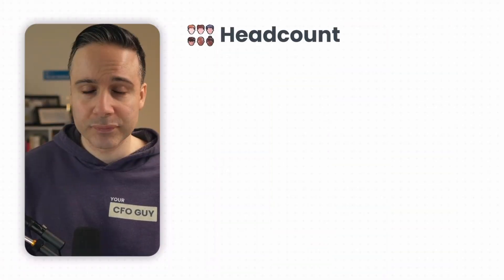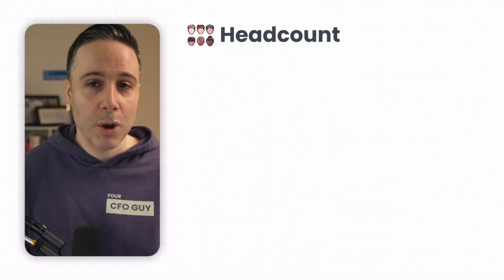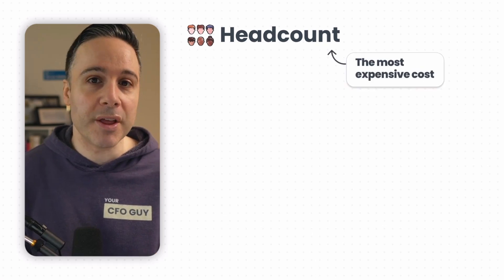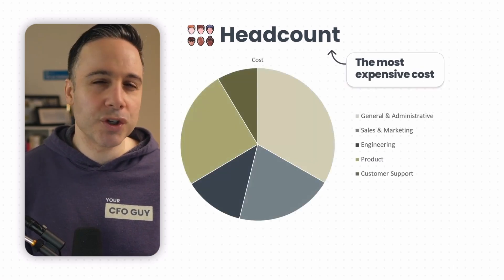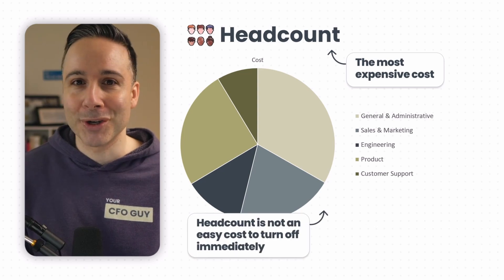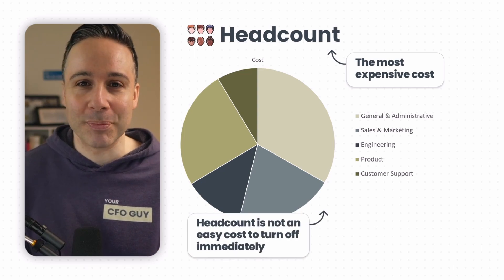What's the most important expense? Nine times out of ten, it's your headcount. It's most likely going to be your most expensive cost each month, and it's not really something you can just turn off quickly — well, you can try, but you'll probably end up with a lawsuit on your hands. That's why it's really important to get your headcount forecast right.